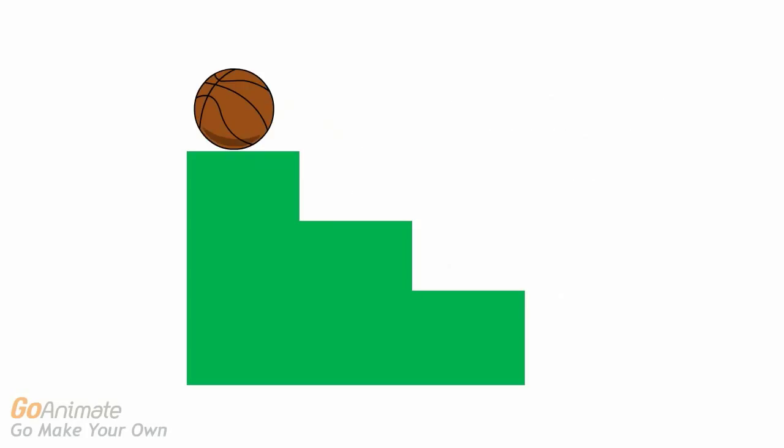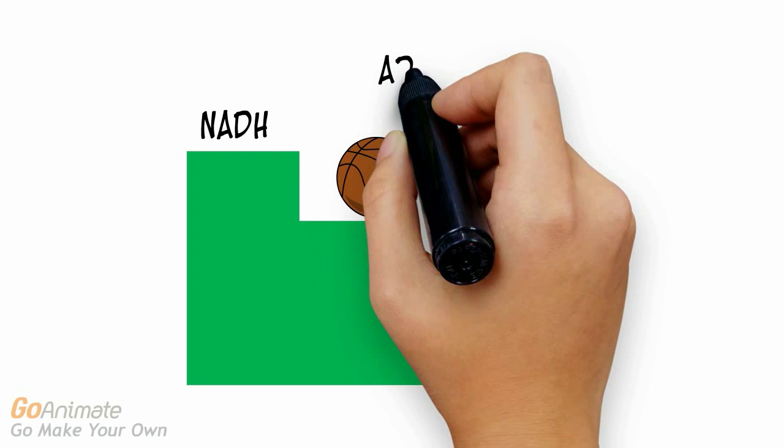This is where our energy molecules come into the picture. NADH contains potential energy in the form of electrons. NADH enters the electron transport chain at a higher energy state to allow the production of three ATPs.